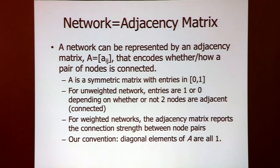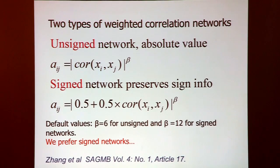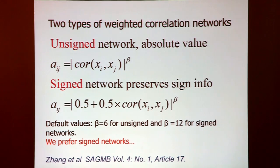We encode a gene network using an adjacency matrix, where the adjacency between two genes measures their co-expression in some form. In WGCNA, we define these adjacencies based on a correlation coefficient and distinguish two types: the unsigned correlation network based on the absolute value of the correlation, and the signed network adjacency.